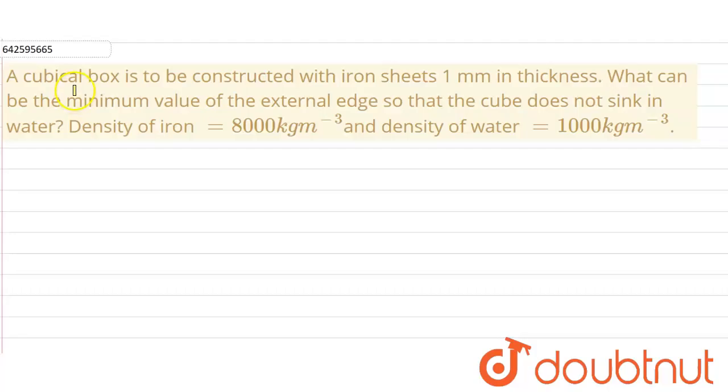Hello everyone. The question is: A cubical box is to be constructed with iron sheet 1mm in thickness. What can be the minimum value of the external edge so that the cube does not sink in water? Density of iron is 8000 kg/m³ and density of water is 1000 kg/m³.